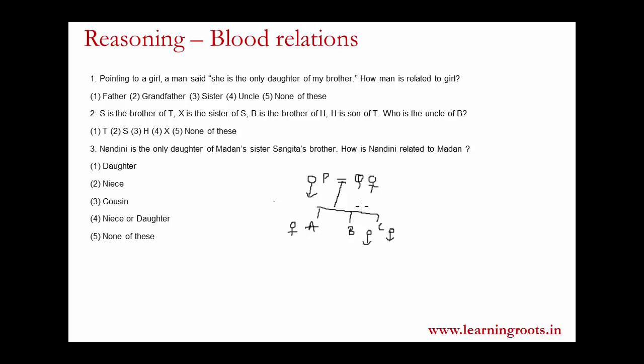You can practice these questions — there are three questions here. I will solve question one and question three, which are the representative ones, and you can solve question two later as practice. So, question one: pointing to a girl, a man said, 'She is the only daughter of my brother.' It's a very simple question with only one piece of information. The man is saying it.